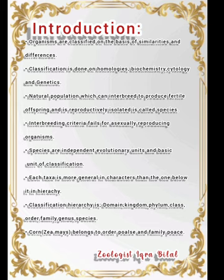Each taxon is more general in characters than the one below it in the hierarchy. The phylum is more general than class, and class is more general than order. The classification hierarchy is: domain, kingdom, phylum, class, order, family, genus, species.